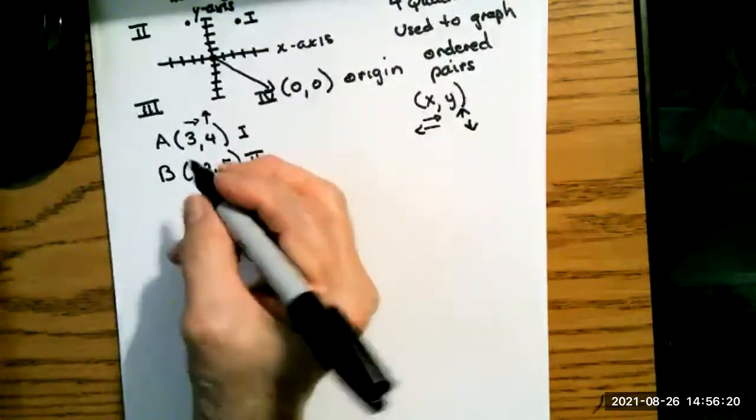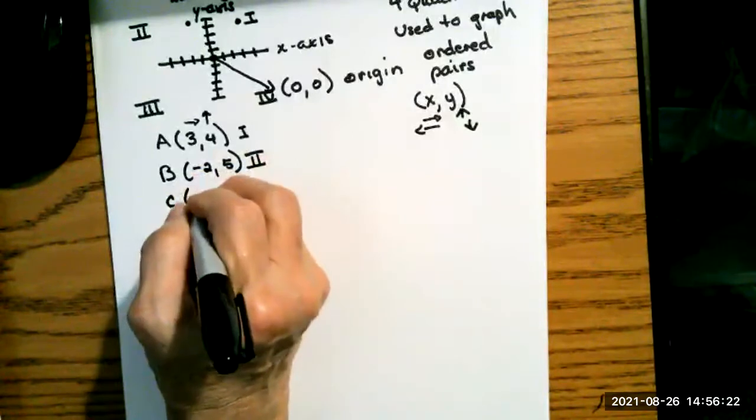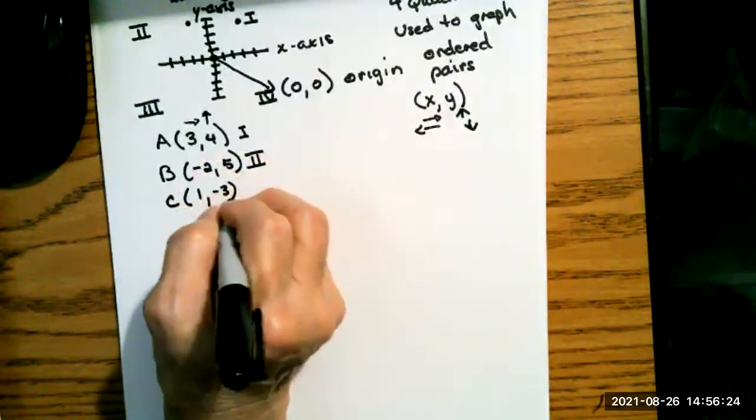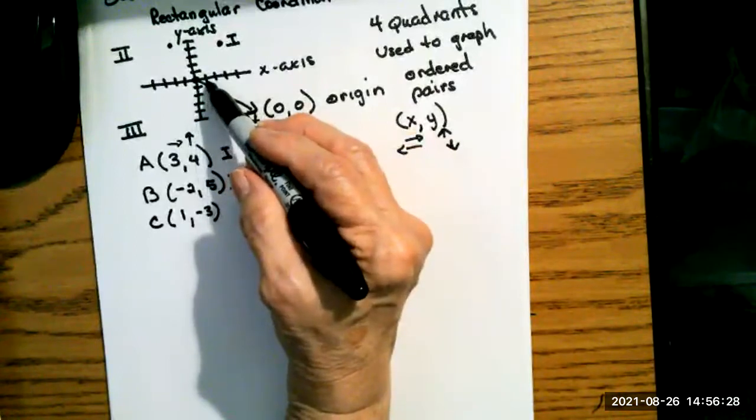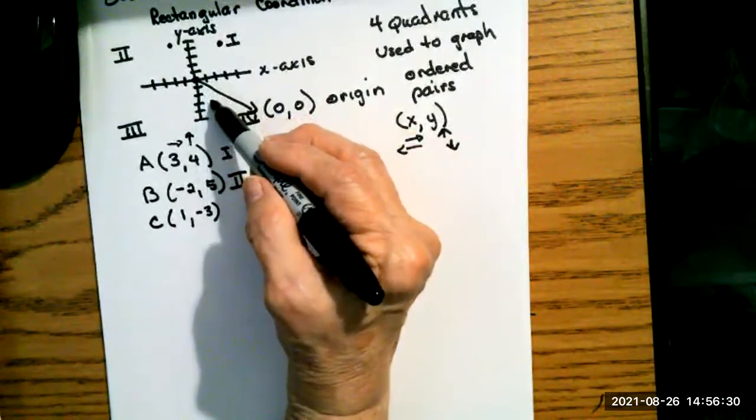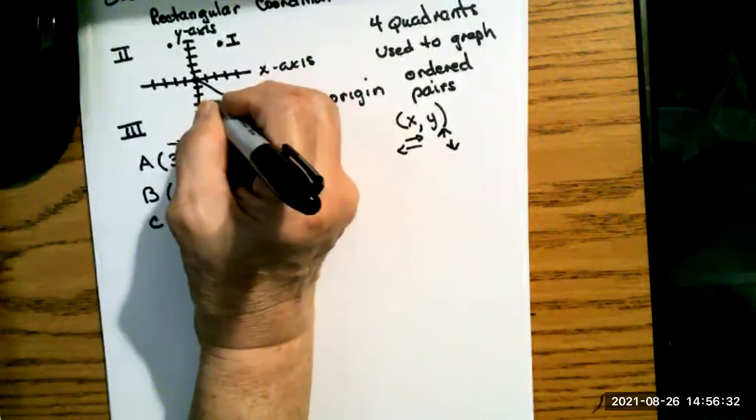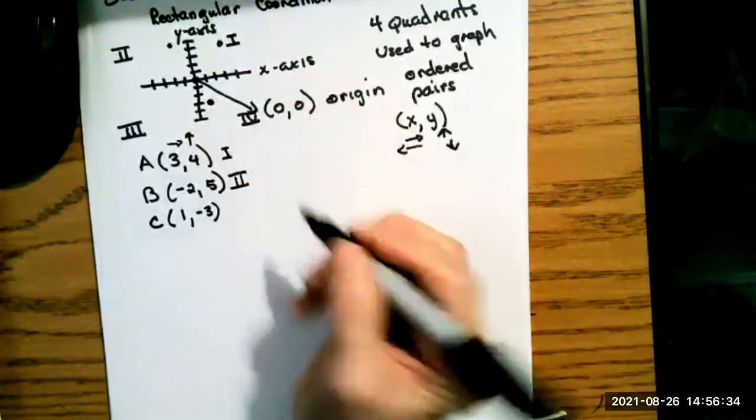If I use the point C, which is one, negative three, I would start at the origin. I go one over, and then I go one, two, three down. That is in quadrant four.